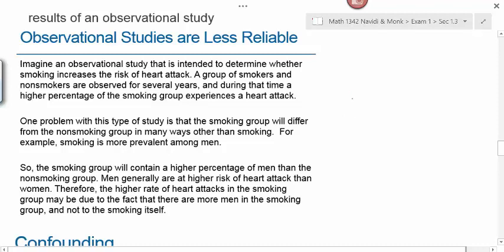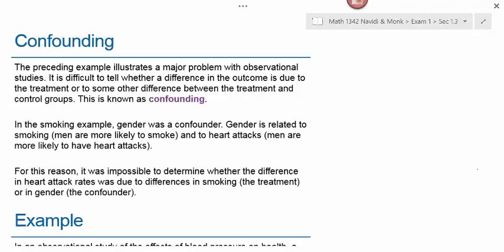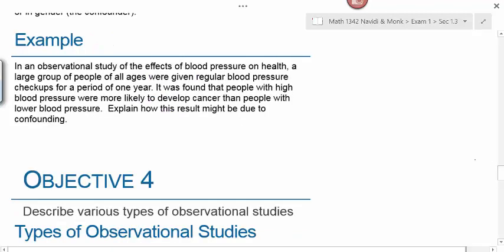In this case, gender is a confounding variable because gender affects heart attacks and the gender makeup of the two groups was different. This illustrates a major problem with observational studies: it's difficult to tell whether a difference in outcome is due to the treatment or to some other difference between groups. Gender was related to both smoking and heart attacks, so it was impossible to determine whether the difference in heart attack rates was due to smoking or gender.